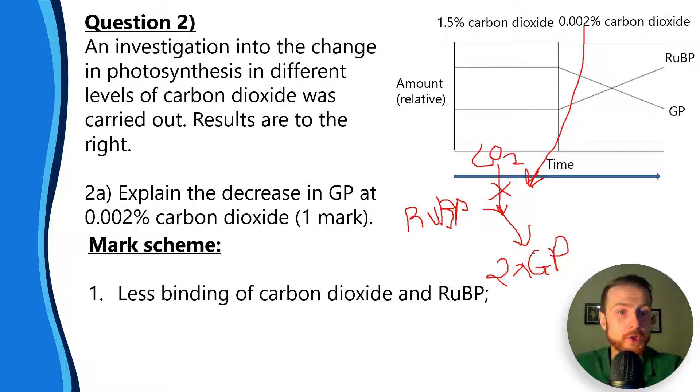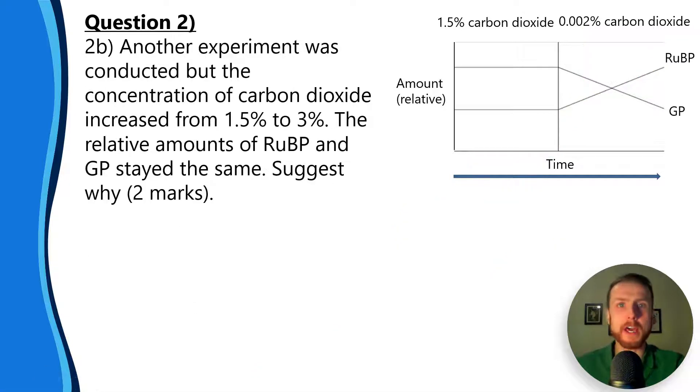So here what we're doing is we're removing the CO2. So we're not going to have RuBP going to GP. That's why RuBP increases because it's not being converted into GP, but the GP is still getting converted into TP and RuBP because that doesn't require carbon dioxide.